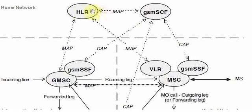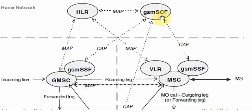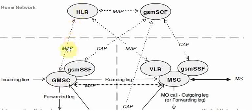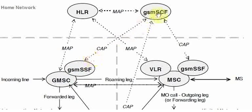In the home network, there is HLR and there is SCF — or you can say IL — because SCF is the general term used for intelligent network. HLR and SCF are connected on mobile application part. On the interrogation network, there is GSM-SC which is connected to HLR on mobile application part, and the SSF function of GSM-SC is connected to SCF on CAMEL application part.